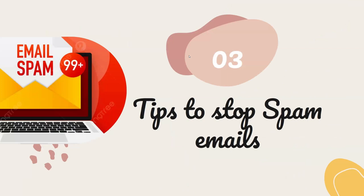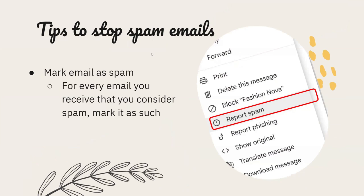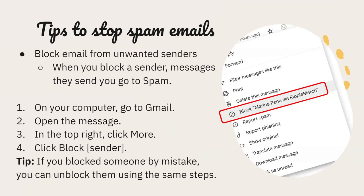Tips to stop spam emails: you can mark emails as spam — for every email you receive that you consider spam, mark it as such. You can also block unwanted senders. When you block a sender, messages they send go to spam. To do this on your computer, go to Gmail, open the message, click 'More' in the top right, and then click 'Block Sender.'